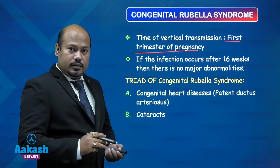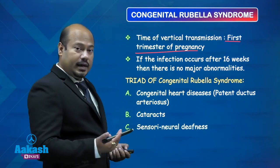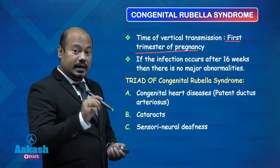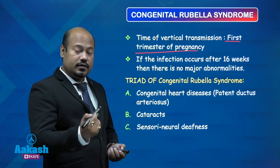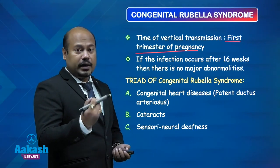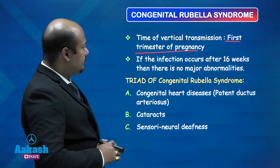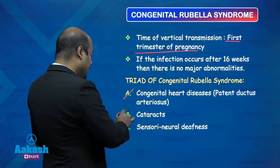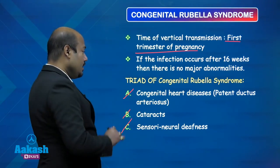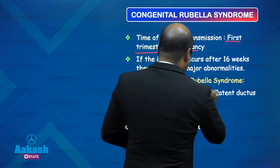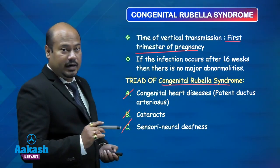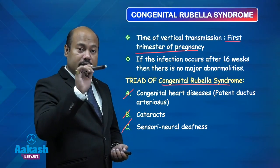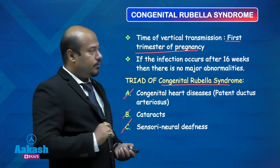The triad of Congenital Rubella Syndrome consists of: congenital heart disease (specifically patent ductus arteriosus), cataract, and sensorineural deafness — not conductive deafness. The rubella virus damages the developing nerves in the fetus responsible for carrying sound impulses to the brain, causing sensorineural deafness. This triad occurs when rubella virus is transmitted from mother to fetus in the first trimester, as rubella is classified in the TORCH group of teratogens.